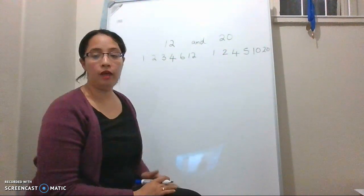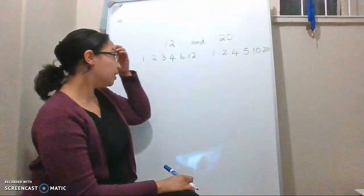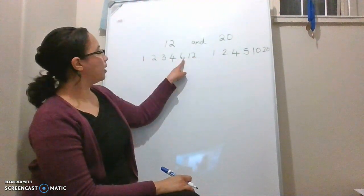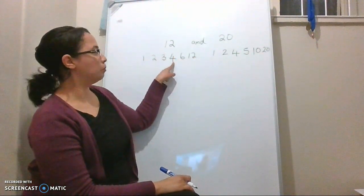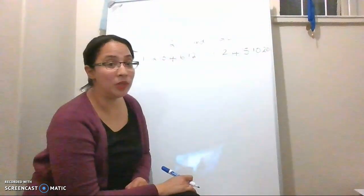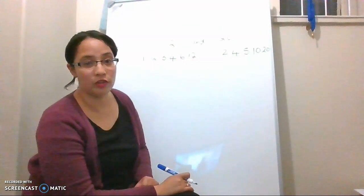Remember, these factors all occur in pairs. So you can see here that 2 times 6 is 12, 3 times 4 is 12, and that's a quick way for you to check whether you've written all of them down.